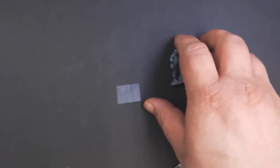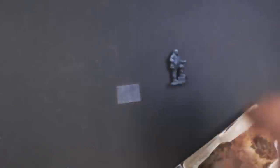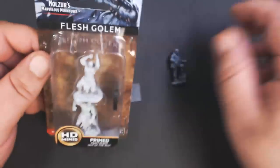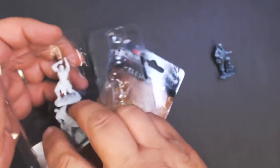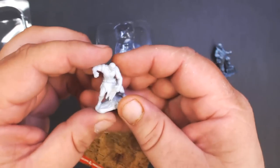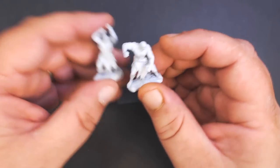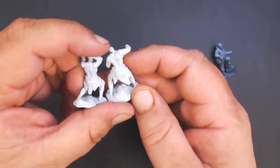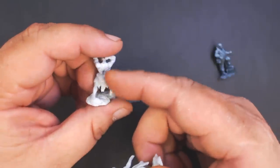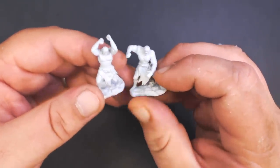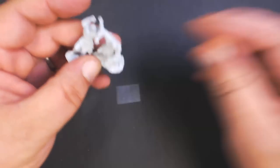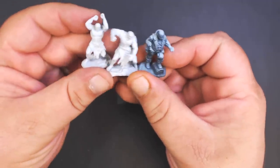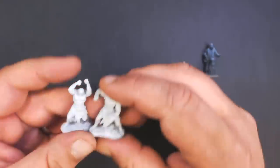Next up we've got flesh golems from the Nolzer's line, and these two are different. Yeah, typical Frankenstein's monster looking—you can see some stitches in there where they've sewn different limbs on and such, and just a loincloth. Standard human size. Those will be fun to paint up and probably fairly quick too.